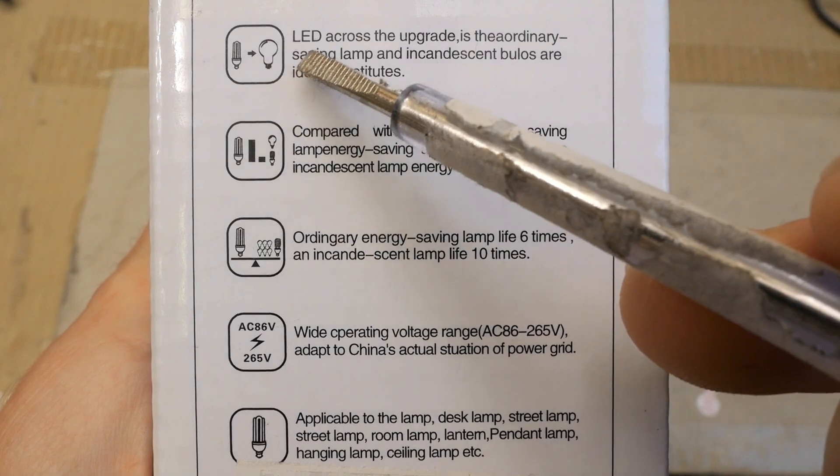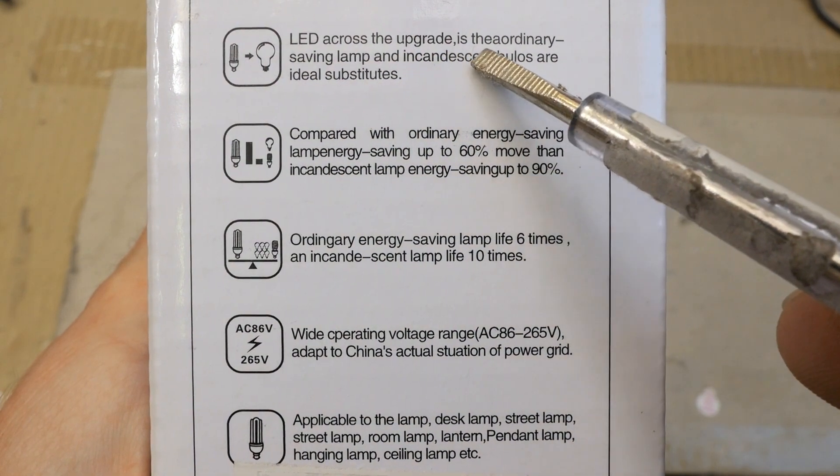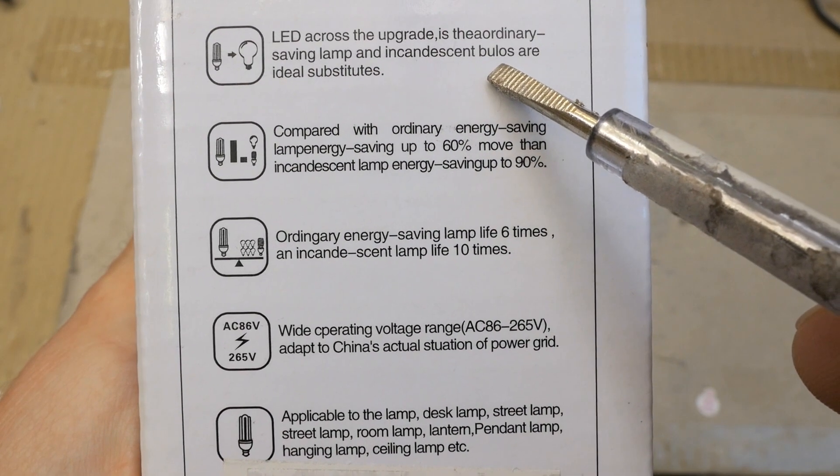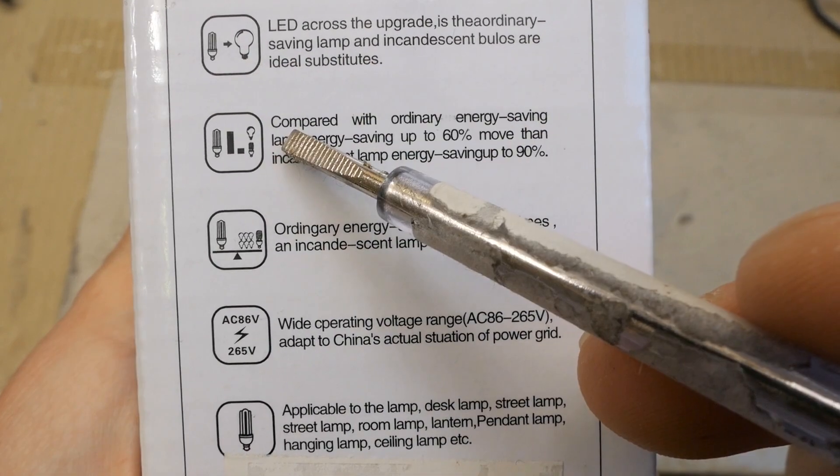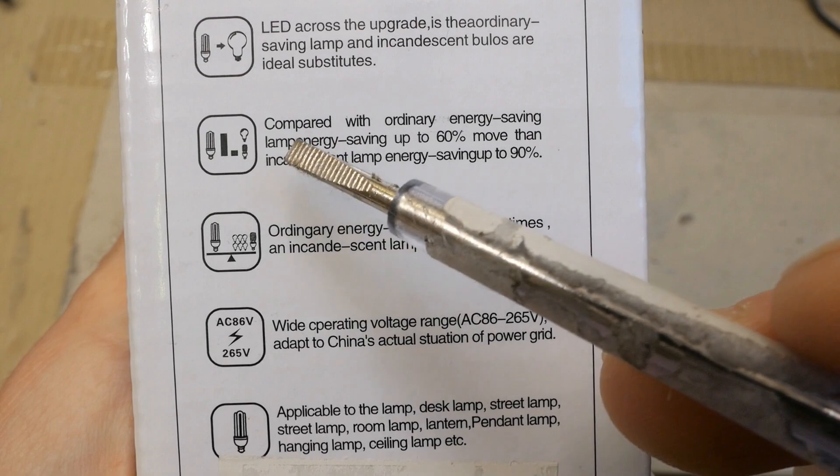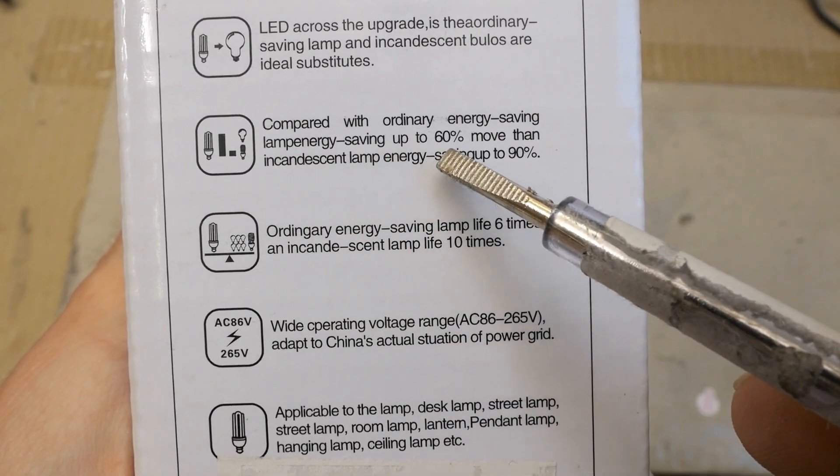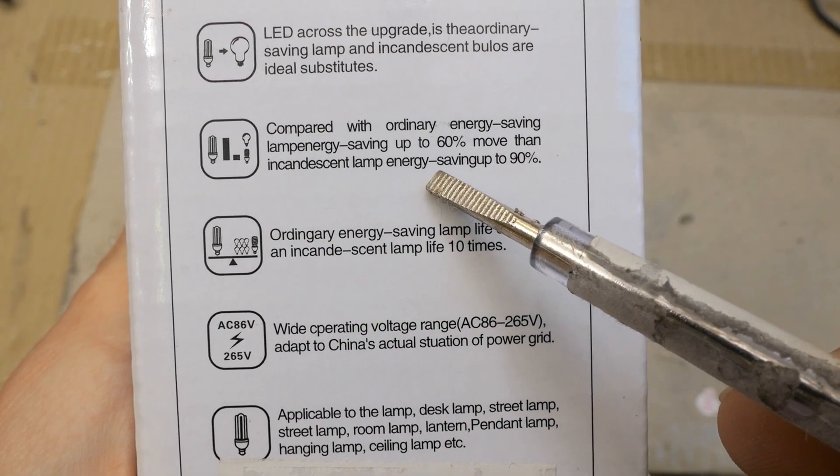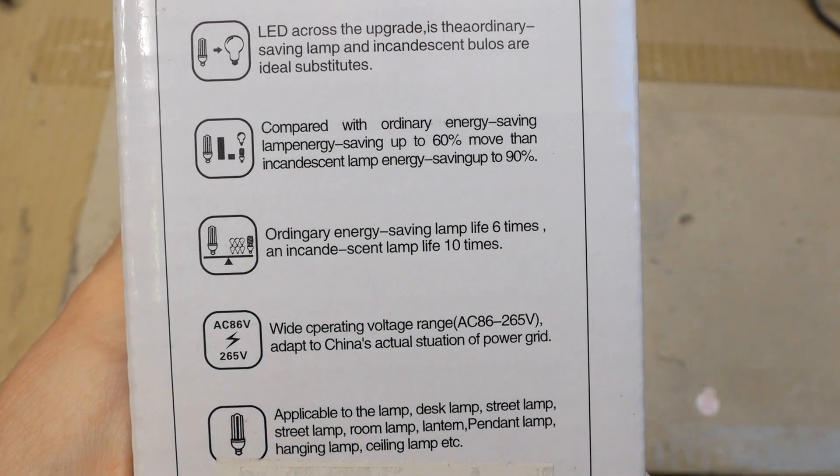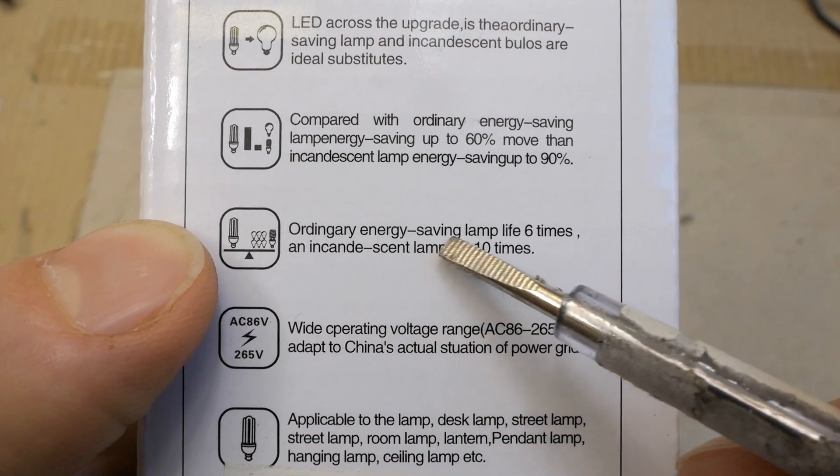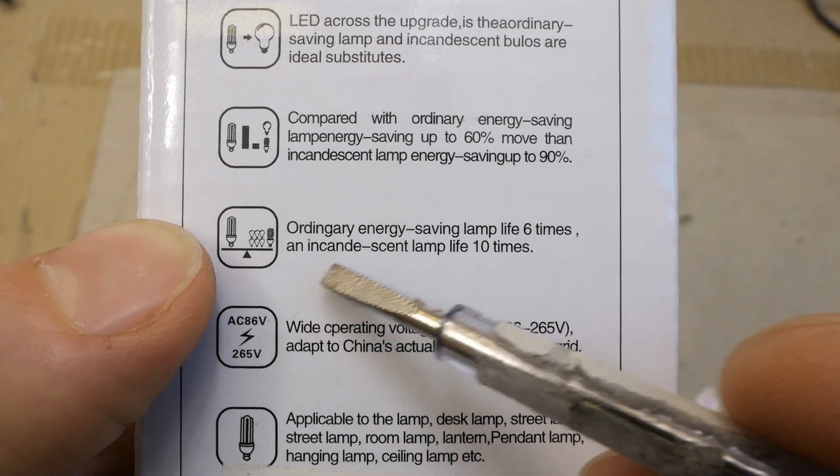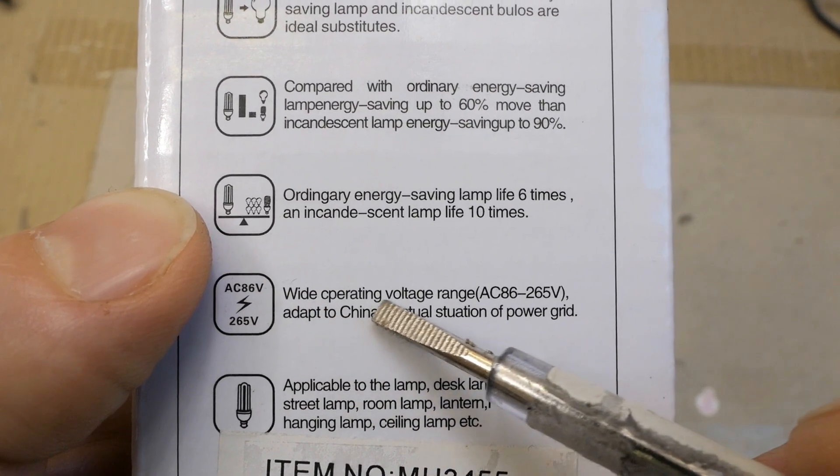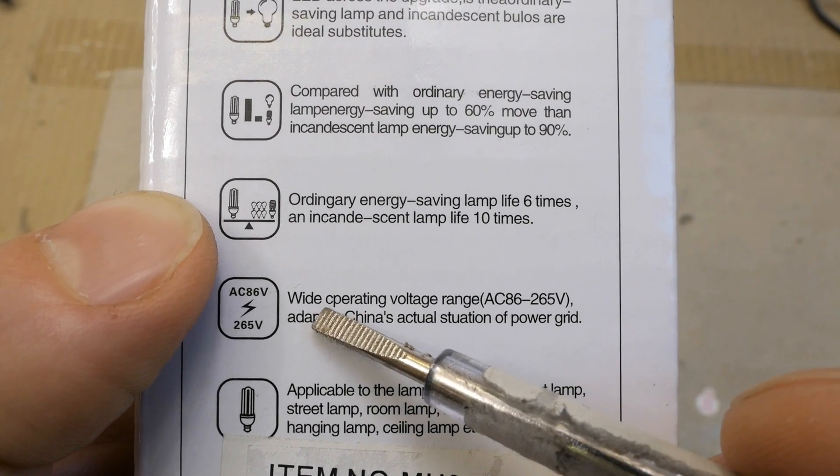But now let's progress to this. LED across the upgrade is the ordinary saving lamp and incandescent bulbs are ideal substitutes. Compared with ordinary energy saving lamp energy saving up to 60% more than incandescent lamp energy saving up to 90%. Ordinary energy saving lamp life 6 times and incandescent lamp life 10 times wide separating voltage range. It's not operating, it's separating.